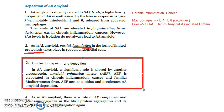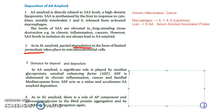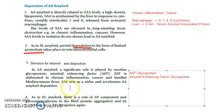For the deposition to happen, a stimulus must be present. One key stimulating factor here is AEF — amyloid enhancing factor — which is a glycoprotein. This AEF glycoprotein is elevated in chronic inflammation, cancer, and familial Mediterranean fever, and it acts as the stimulus for deposition of the AA protein.